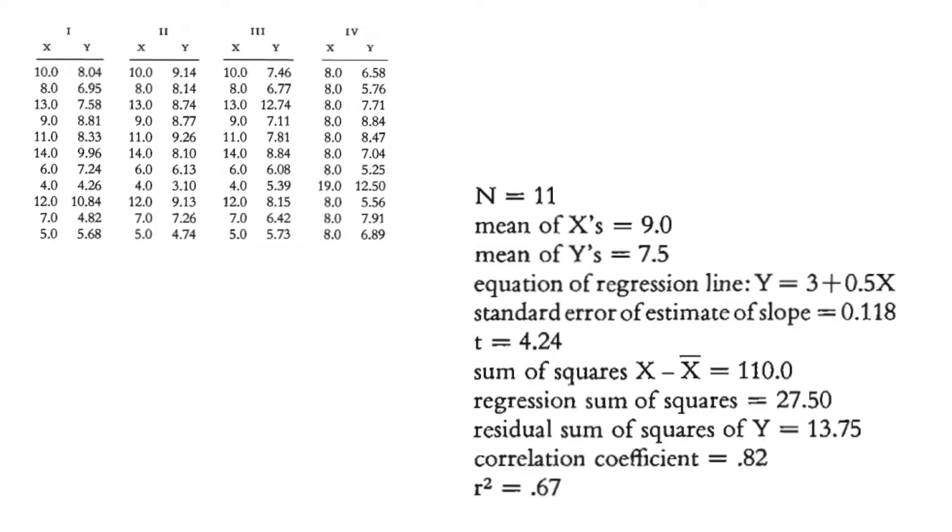This dataset is carefully crafted so that each of the quartet has more or less the same summary statistics. For instance, the mean of x is same, the mean of y is same, both variances are same, the correlation between x and y is same, and even the results of linear regression are same. And there are a bunch of other statistics that are controlled.